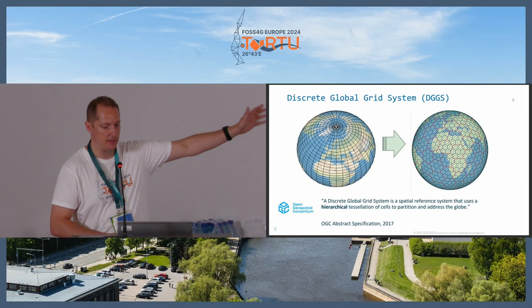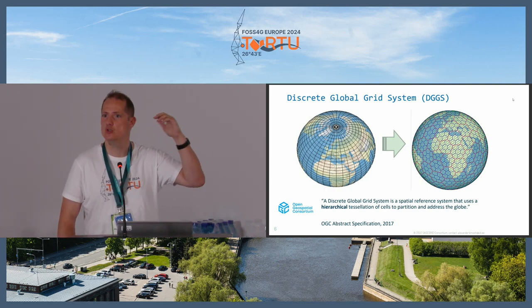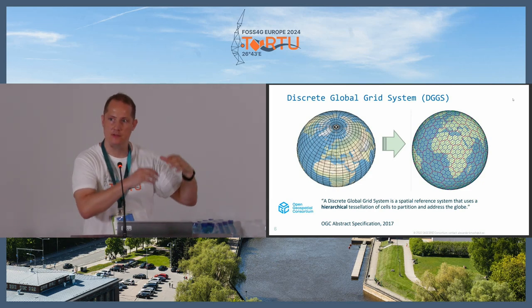It's a spatial reference system that uses a hierarchical tessellation of cells to partition and address the globe. Hierarchical means you have different resolutions, very similar to zoom levels in web tiles. Partition means you have subsets that refer to a certain area on the globe. And address means each cell, each pixel, has a unique ID. This property gives some really nice data management capabilities — you can associate lots of data to a certain area on Earth that is uniquely identified and indexable.